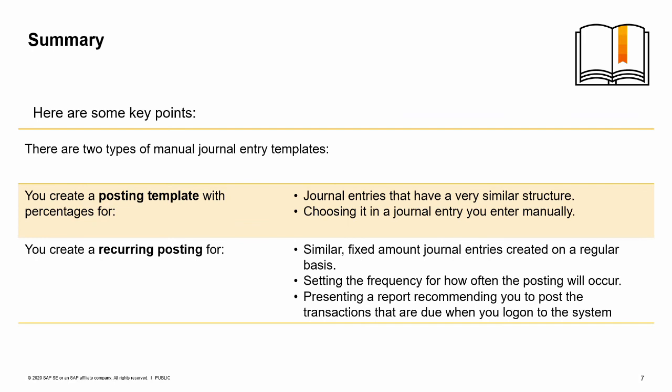Here are some key points to take away. There are two types of manual journal entry templates. You create a posting template with percentages for journal entries that have a very similar structure, and you can then choose this posting template in a journal entry you enter manually. You create a recurring posting for similar, fixed amount journal entries created on a regular basis. You can set the frequency for how often the posting will occur. The system presents a report recommending you to post the transactions that are due when you log on to the system.